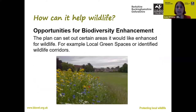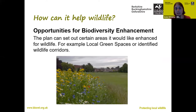Another important thing your plan can do is set out an agreed vision for how you might like to enhance biodiversity and the natural environment in your area. For example, you could look at parks or village greens and plan to plant a wildflower meadow or put in a pond. By setting this out in your neighbourhood plan, you have that agreed shared vision for what you'd like to achieve.